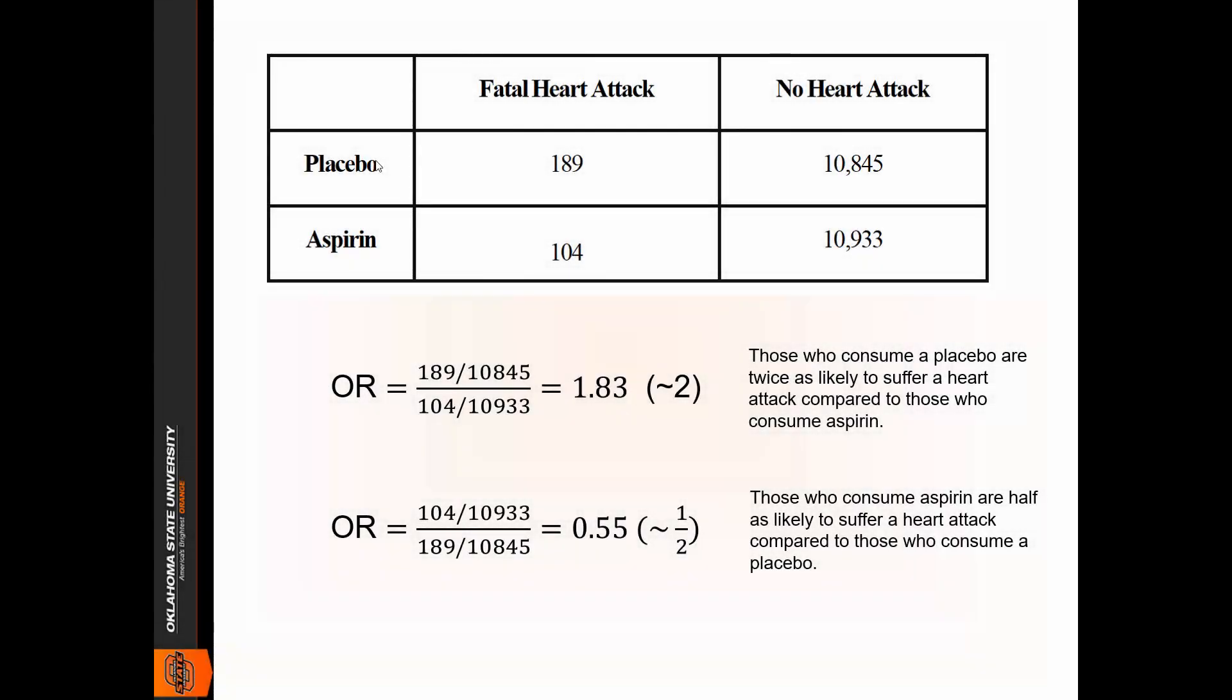In a previous video, we learned how to compute the chi-square test of association for these aspirin and heart attack data. In that video, we also learned how to compute Cramer's V, which is like a correlation coefficient. The way we compute it ranges from 0 to 1, so it is an index of effect size. But we've also learned these other more popular indices of effect size in class, so I want to go through those indices in this video quickly.